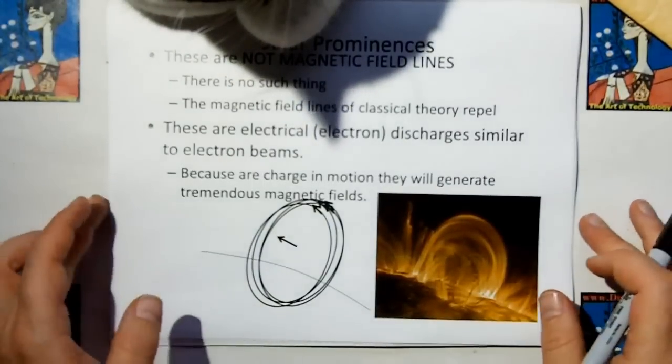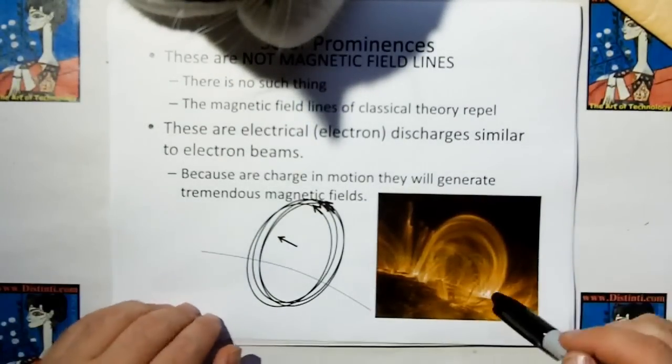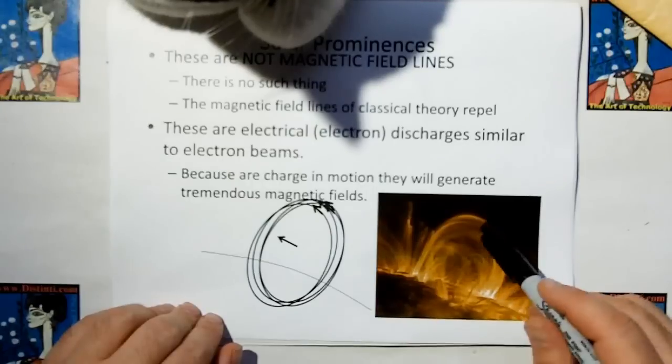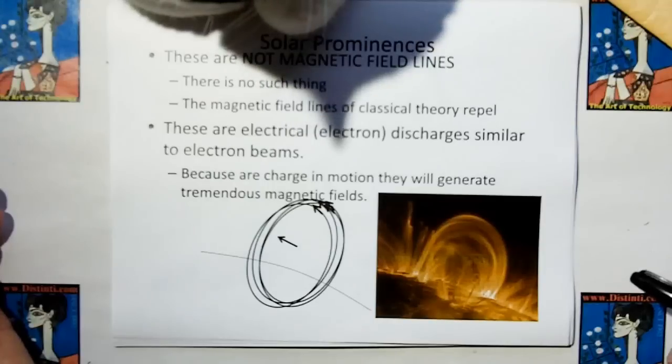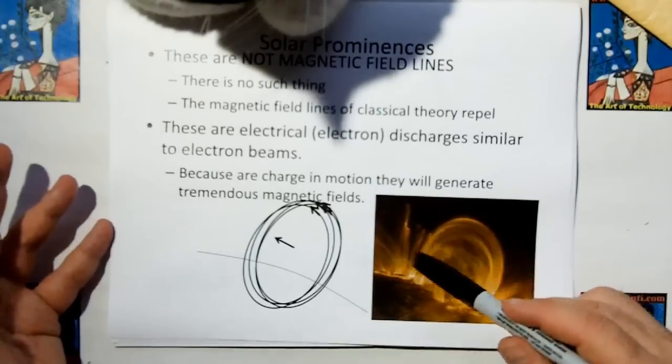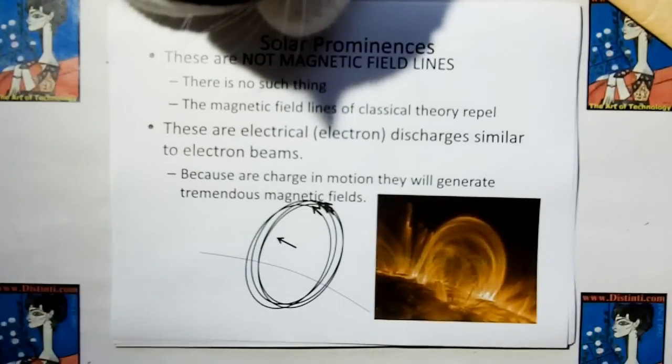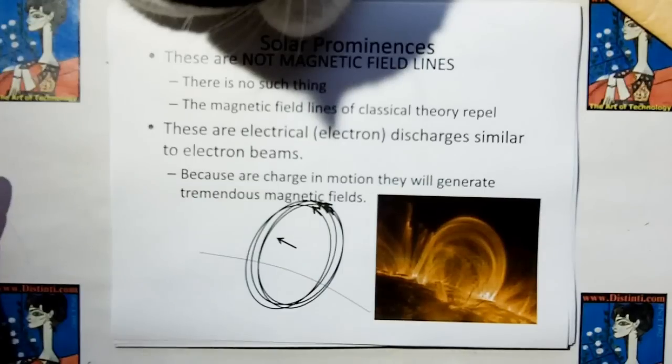Solar prominences. These are not magnetic field lines. When I watch shows about the sun, I just get all bent out of shape because they're going, oh yeah, these are magnetic field lines. Oh, they ain't magnetic field lines. There's no such thing as magnetic field lines. We just demonstrated that.